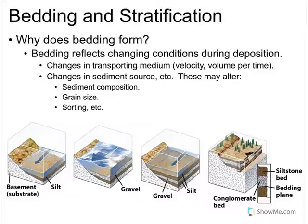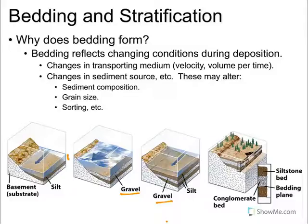Why does bedding form? It's telling us something happened. In this picture, we've got silt getting deposited at time one. Then maybe the speed of the river changes — it picks up speed and can now deposit gravel on top of it, creating a bedding plane in between. Maybe the river slows down again and we start depositing more silt. Usually we're seeing a change in water velocity or sediment source causing a new type of sediment to be deposited on top — that's what makes our bedding.